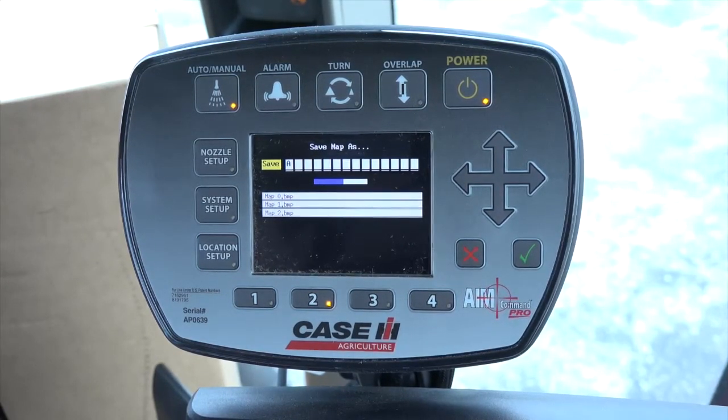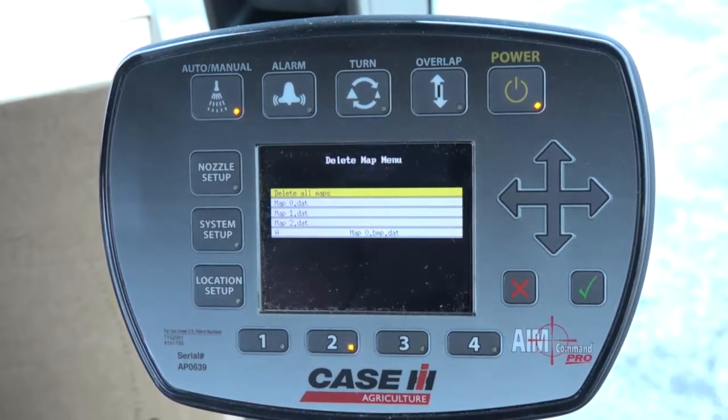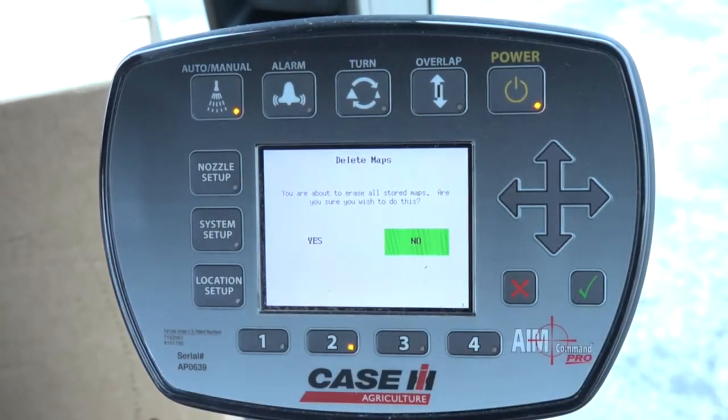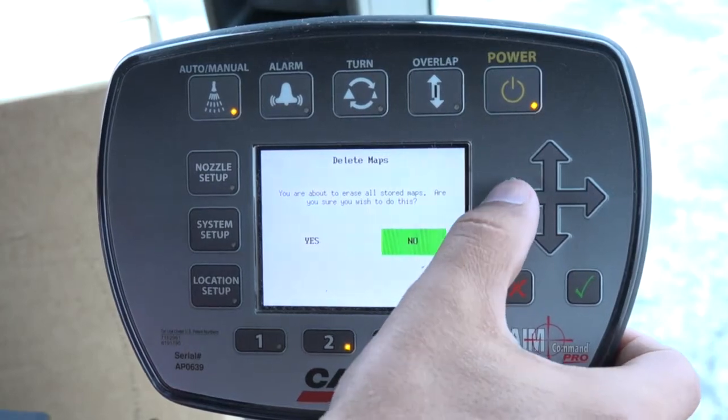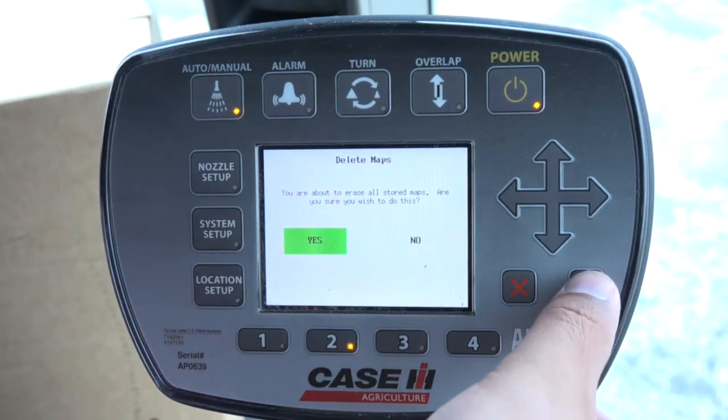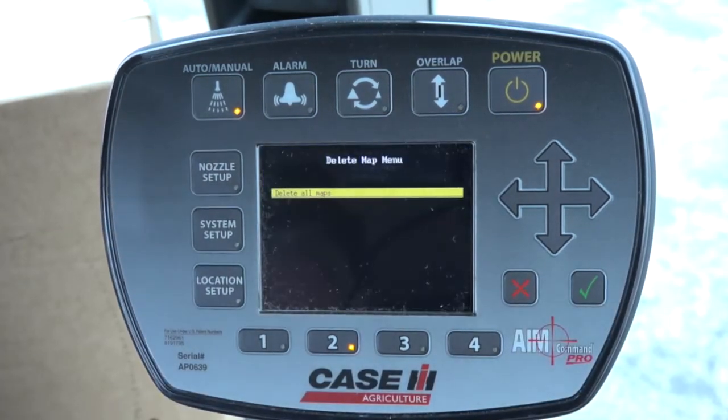Remember, maintenance of maps is critical as if these are not deleted on a timely basis, they can cause several issues. Displays slowing down and causing display malfunctions are often common when maps have not been deleted on a timely basis. This is a simple thing that any operator can do to ensure consistent quality operation of their system.